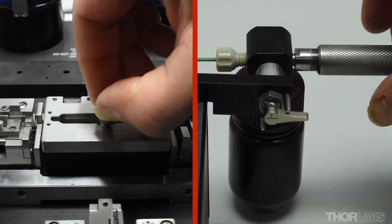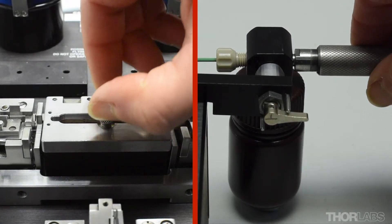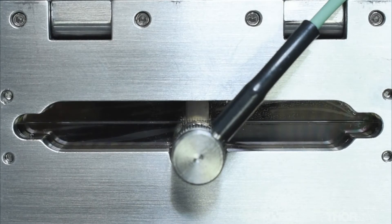Inject recoat material into the mold using either the remote manual injection unit or the injection screw plunger. As material is injected the length of the recoat can be monitored through the viewport in the lid of the recoat mold.